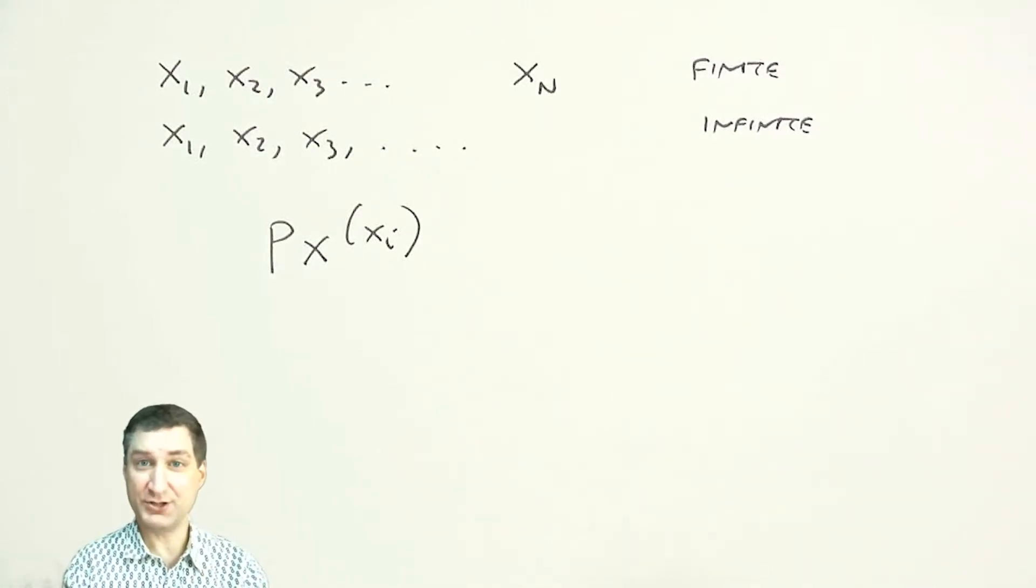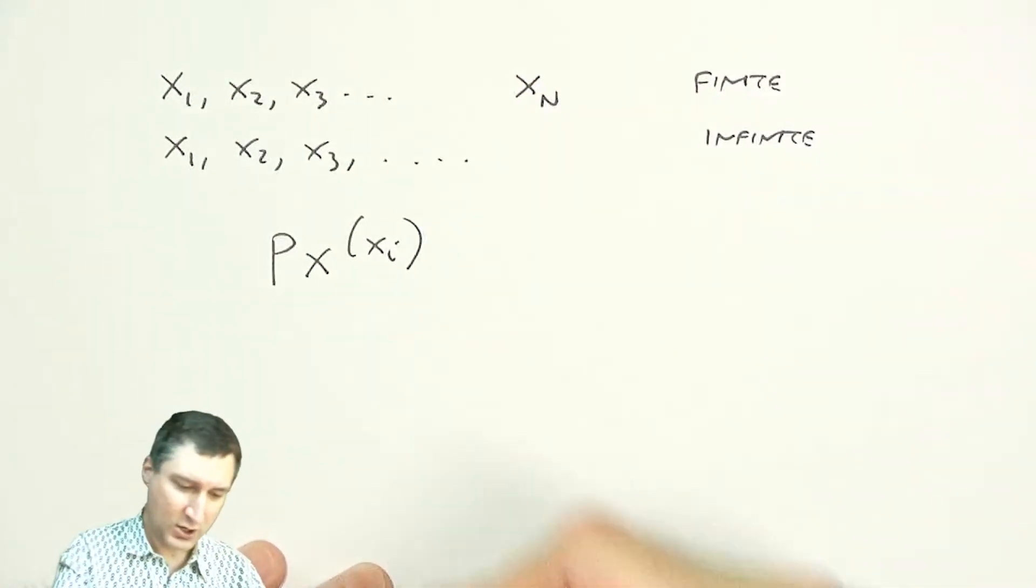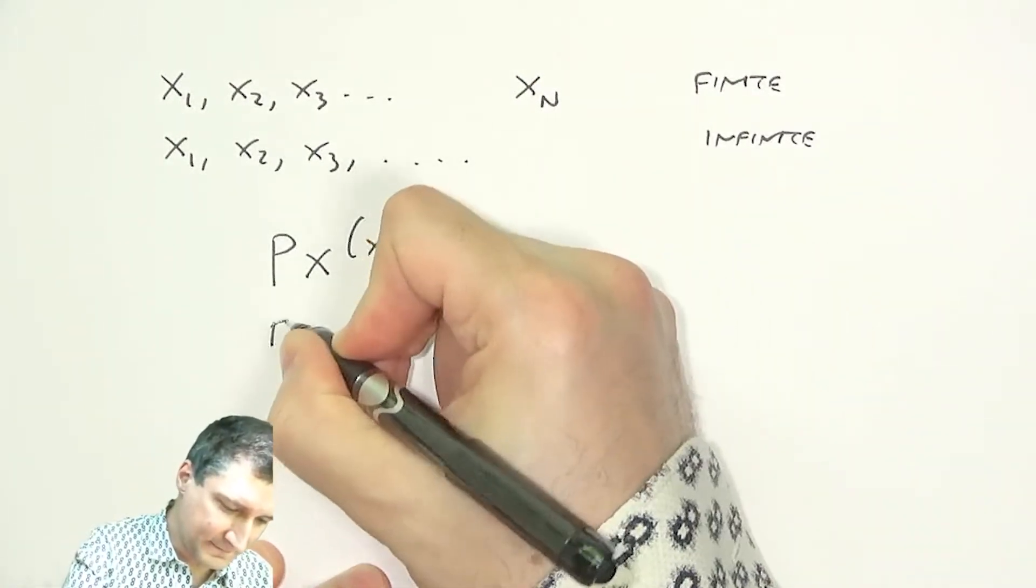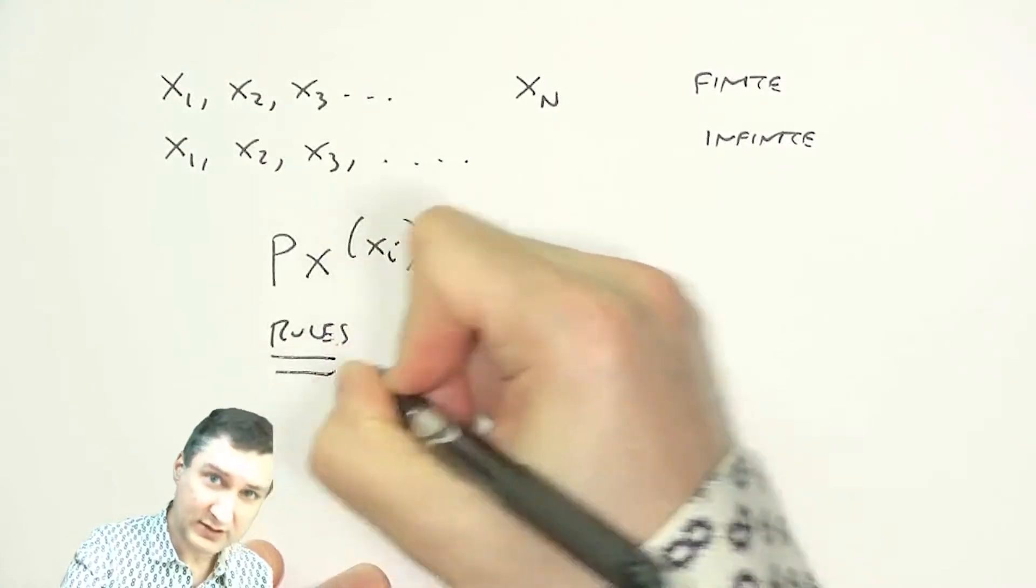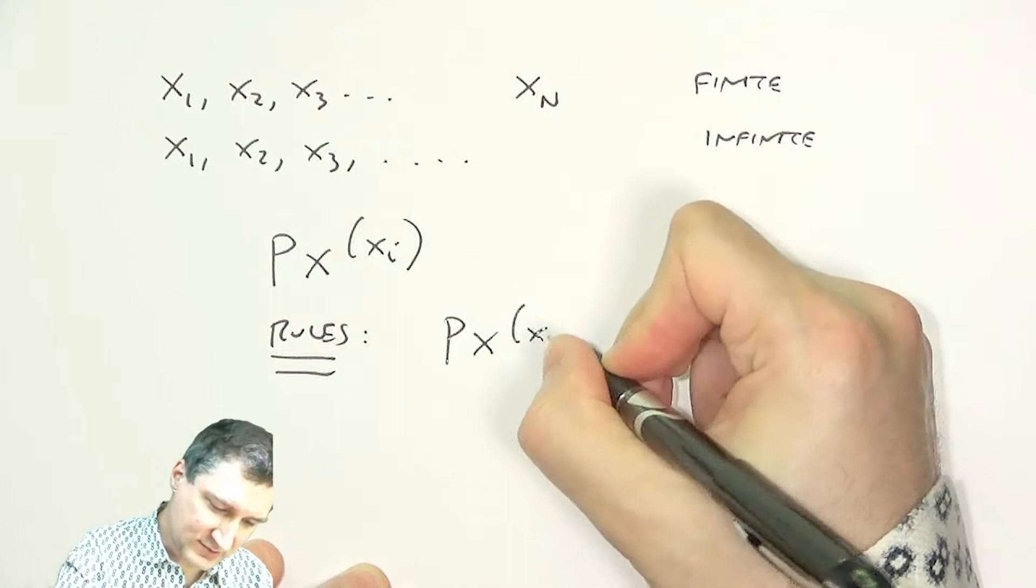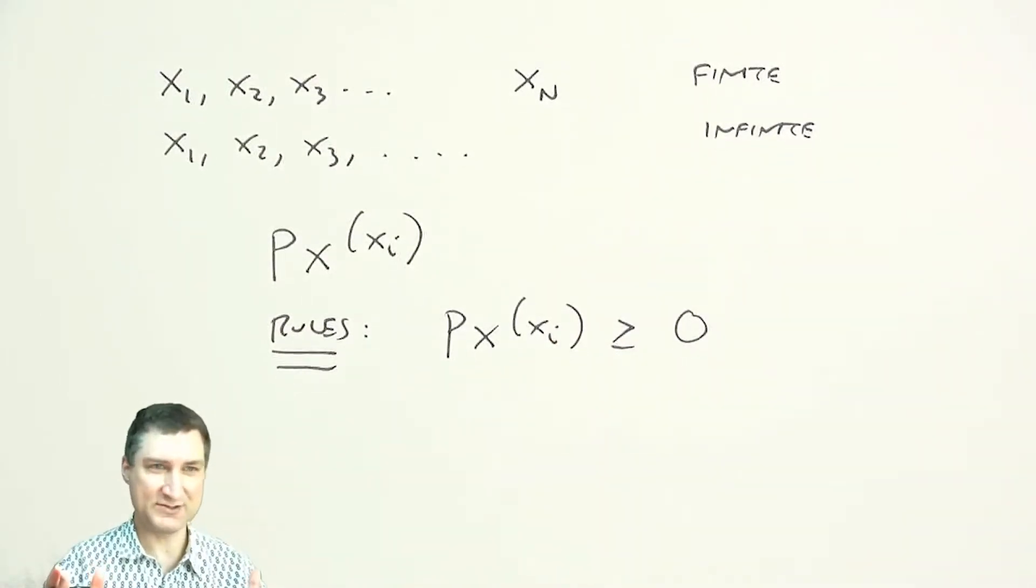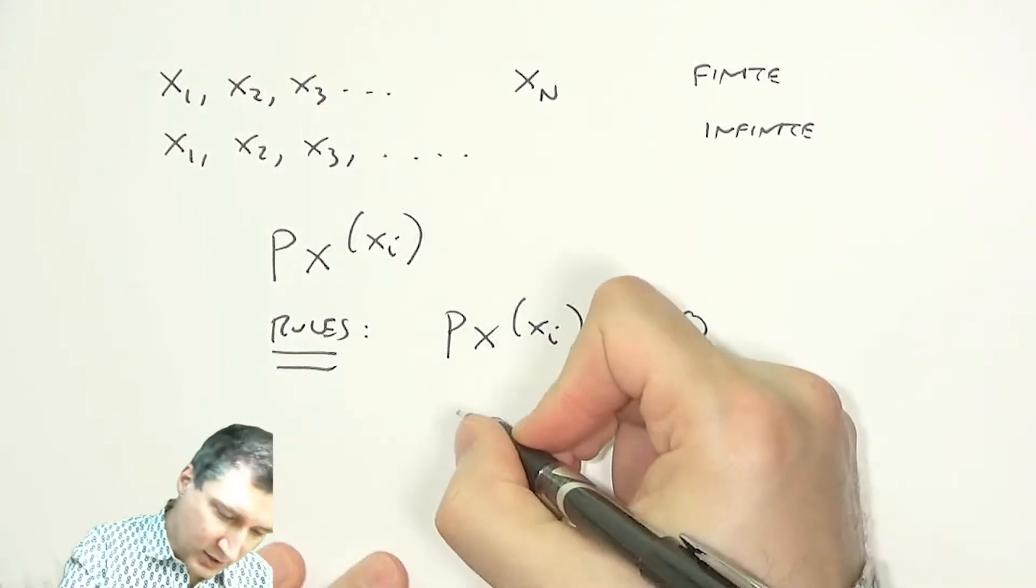And so, the PMF has to satisfy a bunch of rules that we inherit from the rules that we've talked about way back when in one of the earlier lectures. So, for example, because these are probabilities of events, we know that there are some rules. One rule is that these values have to be non-negative. Same as before, I can't have negative probabilities.